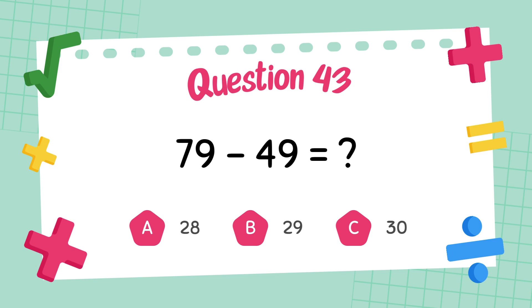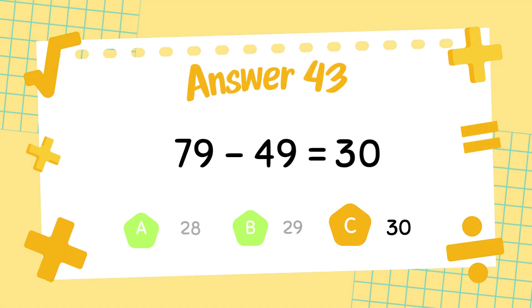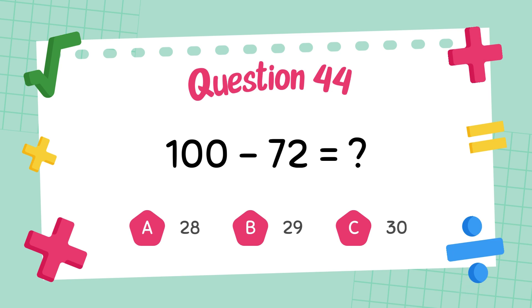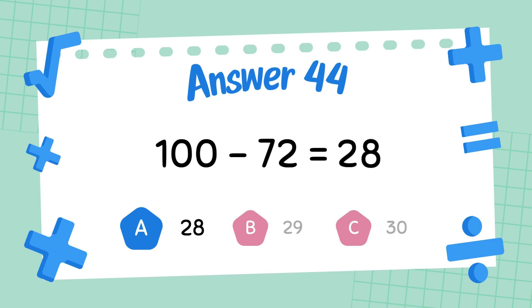What is seventy-nine minus forty-nine? The answer is twenty-eight.